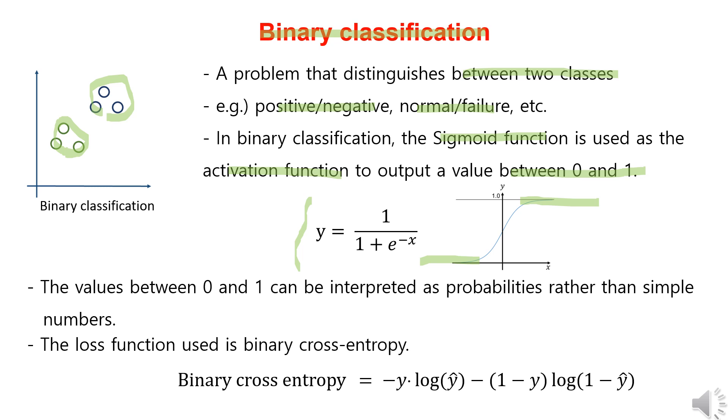The values obtained through the sigmoid function, between zero and one, are not just simple numbers, but can be interpreted as probabilities. For binary classification, we use binary cross-entropy, which we discussed in the previous cross-entropy video, as the loss function.